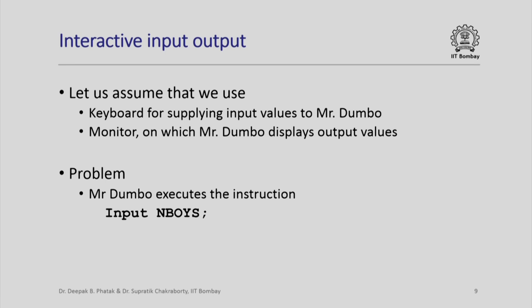Assume then that an input operation will require that we type in a value on a keyboard, and an output operation will cause Mr. Dumbo to bring a value and display it on the monitor. But there is a problem. Imagine that Mr. Dumbo is executing the instruction input n_boys — let us see what happens.